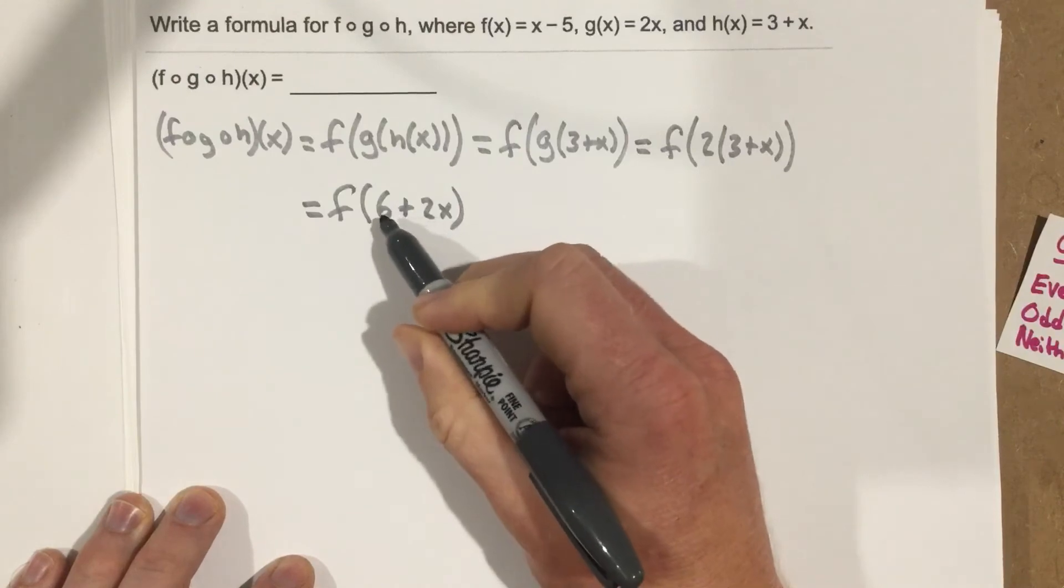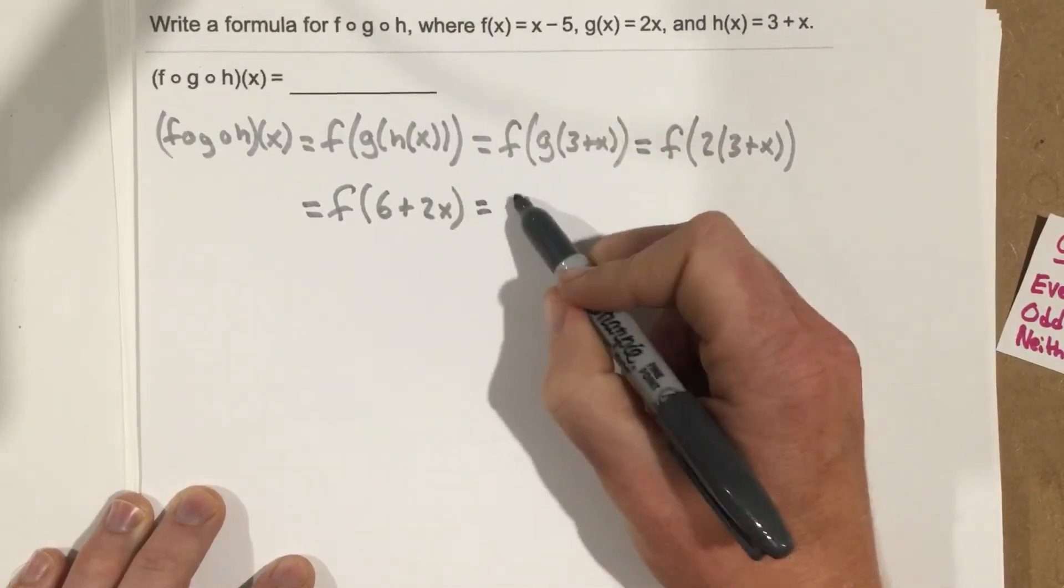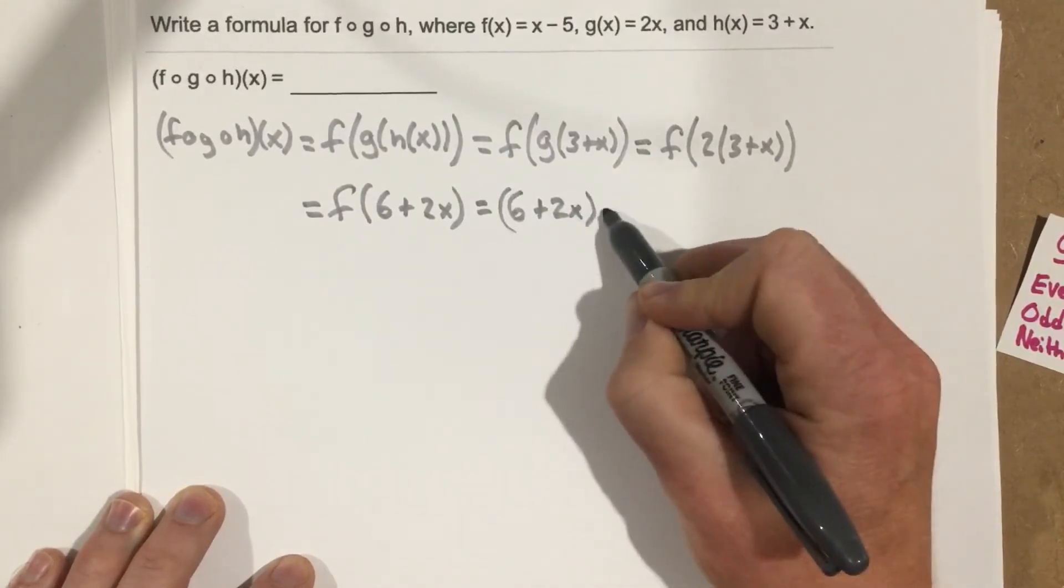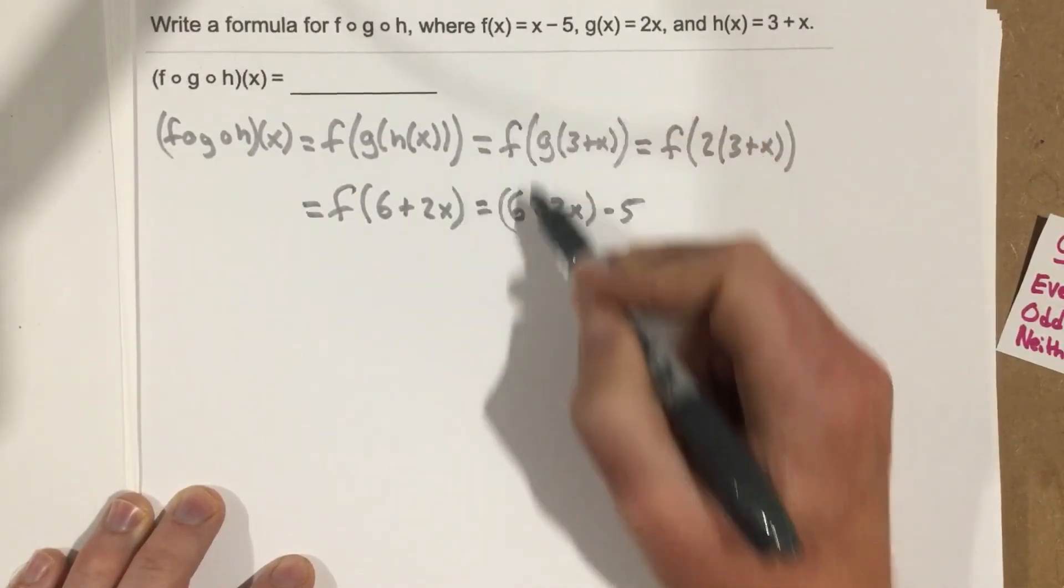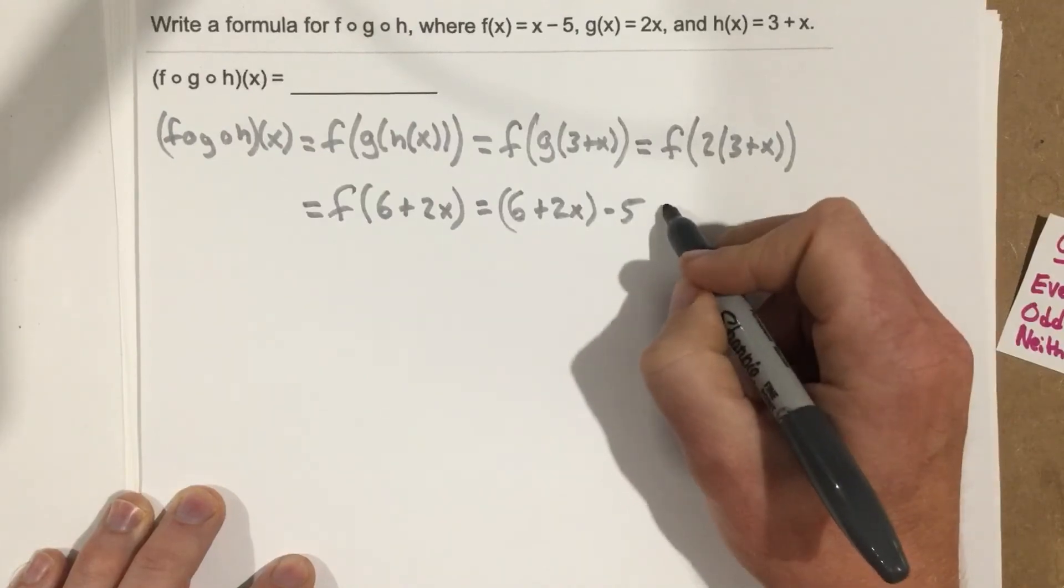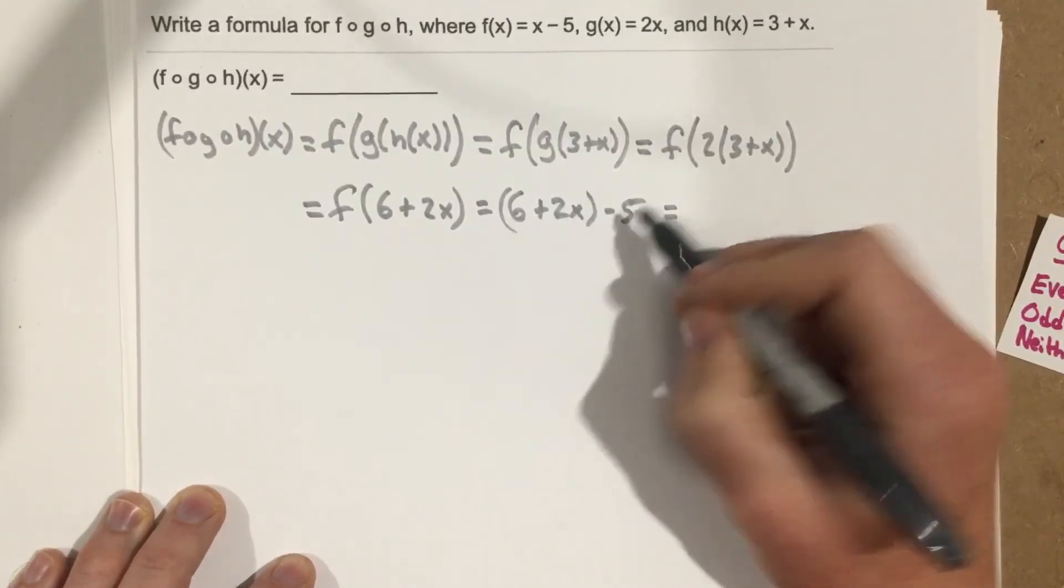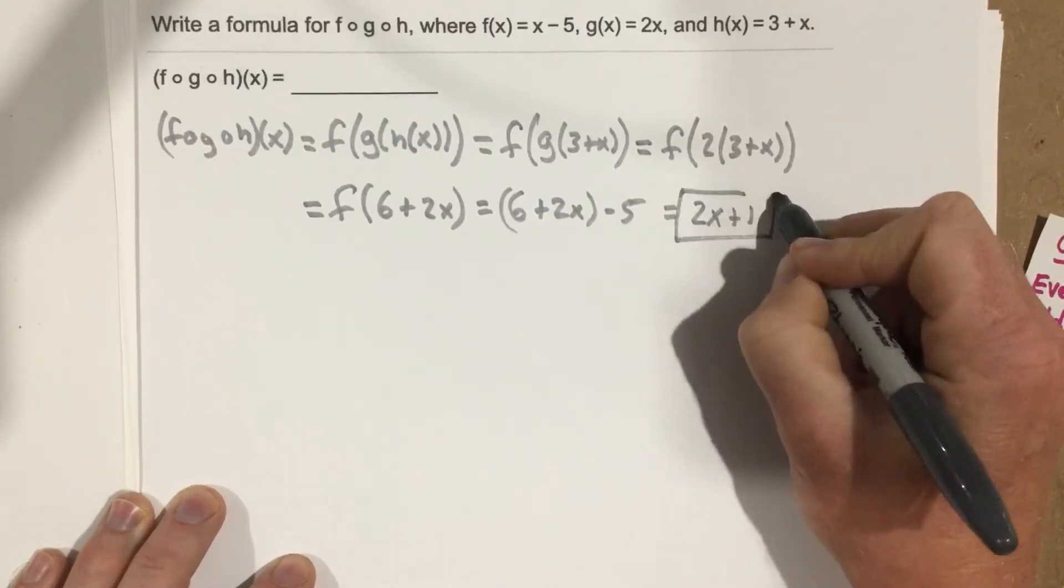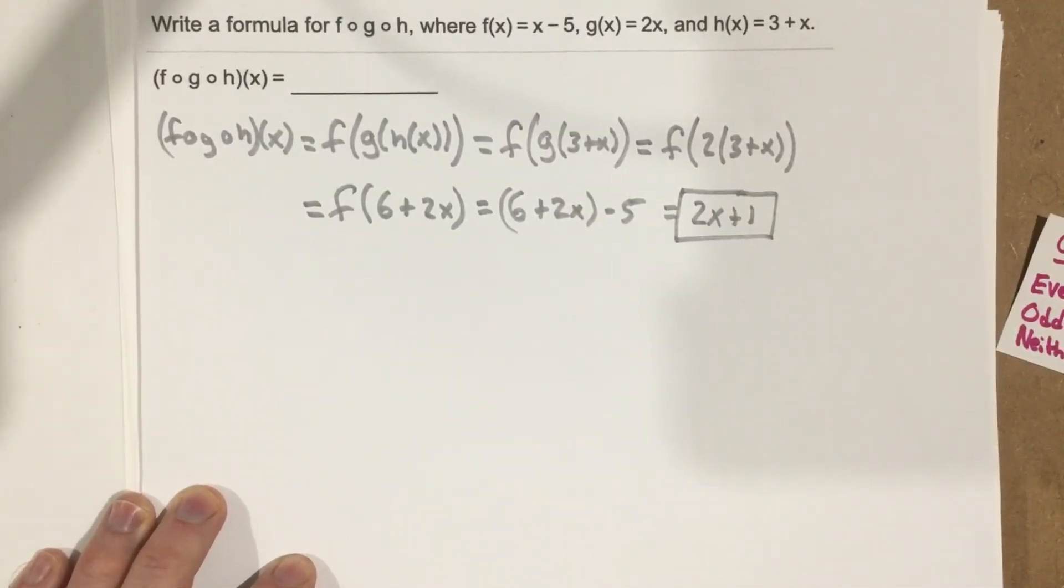I can now take that and plug that into the f function, so I end up with 6 plus 2x minus 5, right? We're replacing the x with 6 plus 2x, which ends up being when I take away the parentheses, I have 6 minus 5, so I end up with 2x plus 1 for the solution.